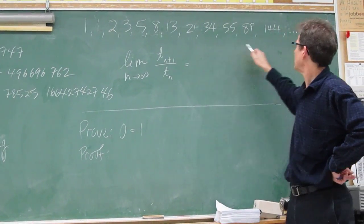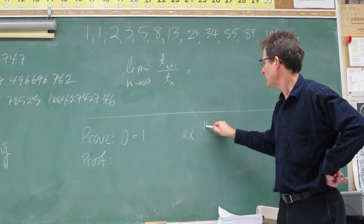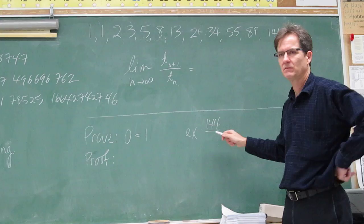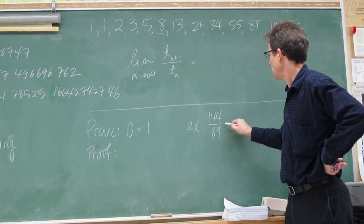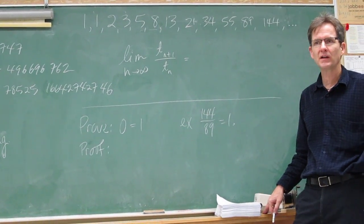So on your calculators, just divide for me 144 by 89. Give it to me to, let's say, two decimal points. Okay, I'll give you the one and the decimal. That's the hard part. You give me the easy part. Three decimals.